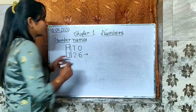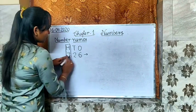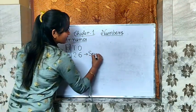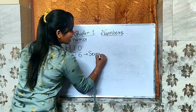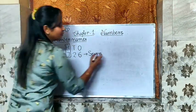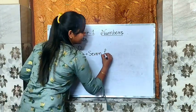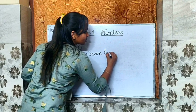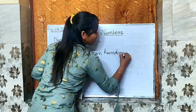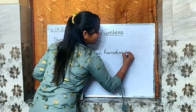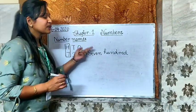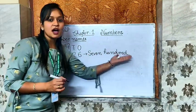Now look — what is the number here? 7. So I have written 7 here. What is the place here? 100. 7 is sitting on which place? 100 place. So I have written here 100. So our number name starts like this: 700.